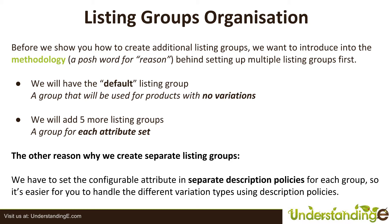We are going to be creating five more listing groups in our system. The reason for that is that we're going to create a group for each attribute set that we just made. So if you only made size, color, and size-color, then you're going to have default and three more listing groups. The other reason why we create separate listing groups is that when we have set the configurable attribute in separate description policies for each group, it's easier to handle the different variation types used in description policies.